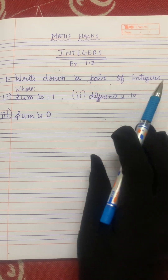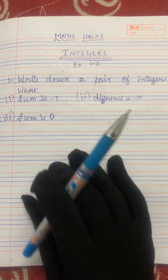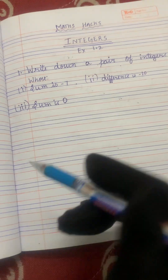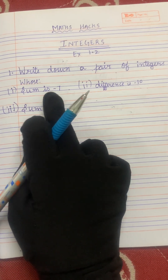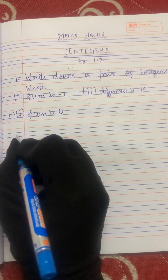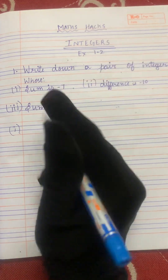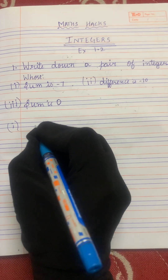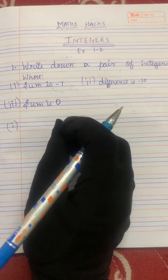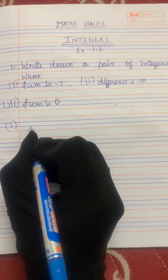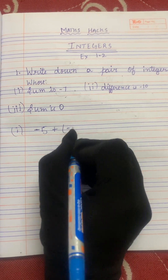Write down a pair of integers whose sum is minus 7. Integers is a collection of whole numbers and negative numbers, right? So we have to take a pair of numbers which gives us the sum as minus 7. We can take any two numbers but we should get the answer minus 7. For example, let's take minus 5 plus minus 2.